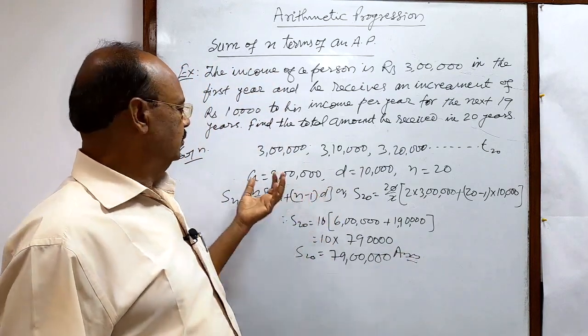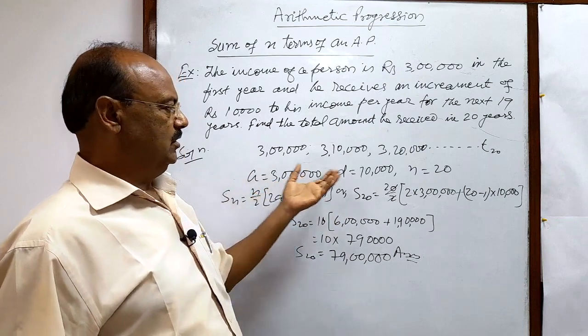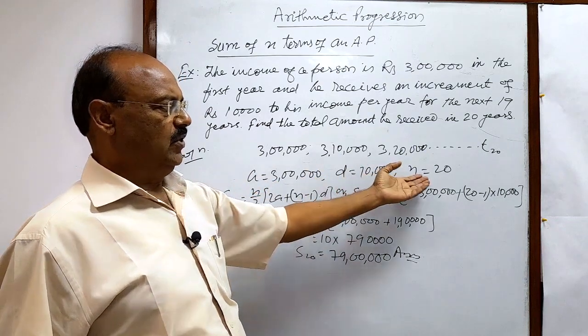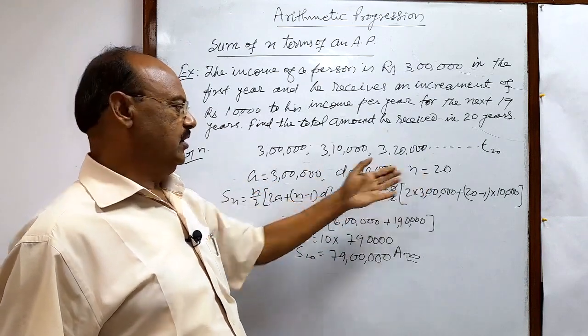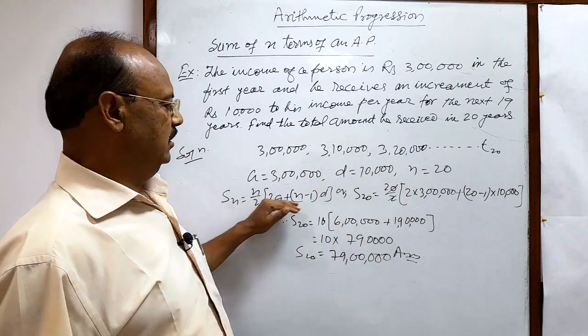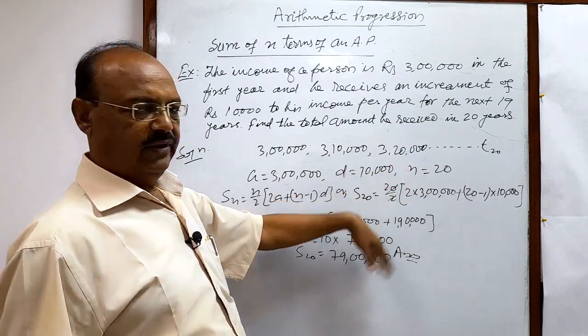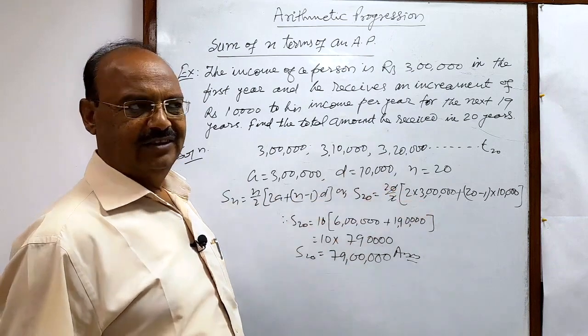So total amount received in 20 years is 79 lakhs. This is the answer. Very simple - just we have to know what is first term a, what is common difference d, what is the number of terms. Number of years is 20. By putting these numbers in this formula and simplifying it, we will get the answer.